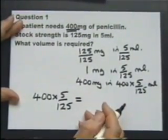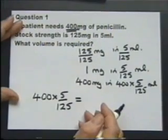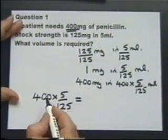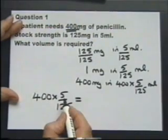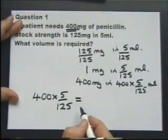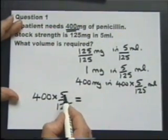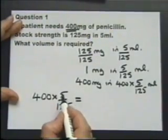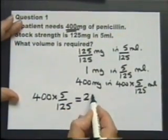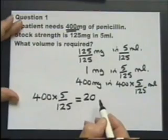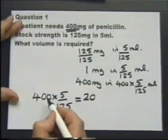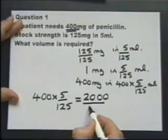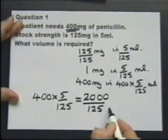Cancelling is the way forward here. You can either cancel as it stands or multiply first and then cancel. Let's multiply first: five times 400 — five times four is 20, so five times 400 is 2000. Now we can do the cancelling.